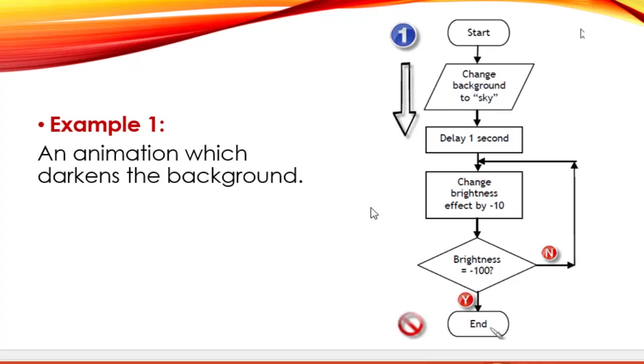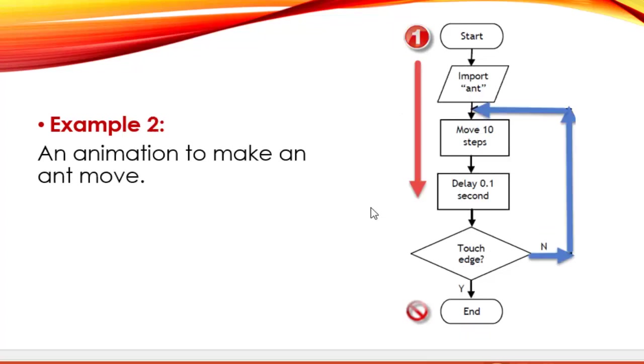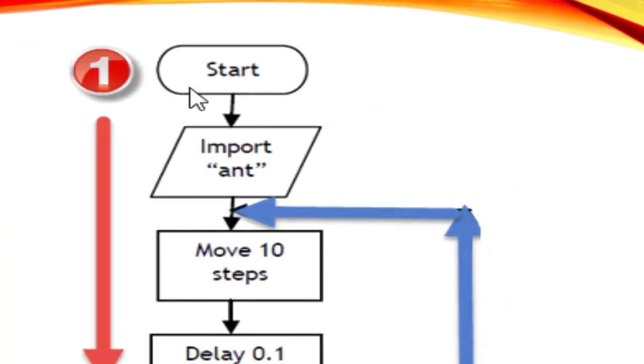So, in the next animation, which is to make an ant move, this is our example 2. Same thing, we will start from the top and end at the bottom using both terminating shapes, which is the rounded rectangle for the start and for the end.